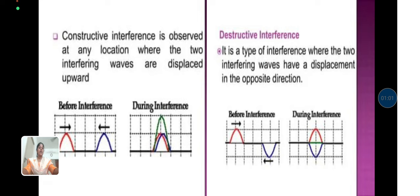Destructive interference is a type of interference where the two interfering waves have a displacement in the opposite direction.